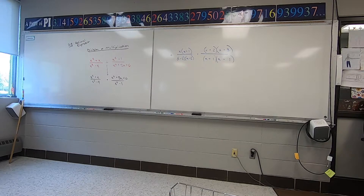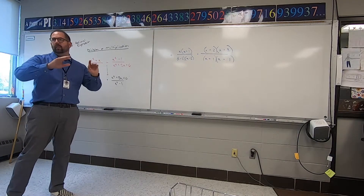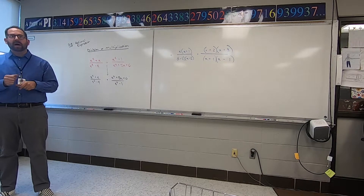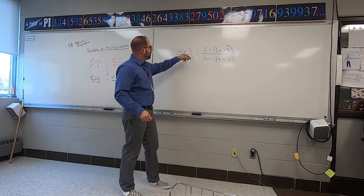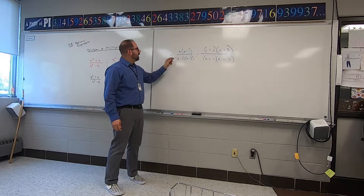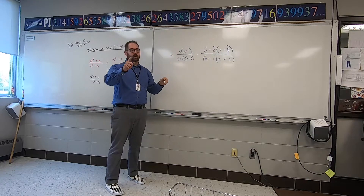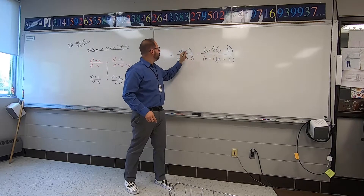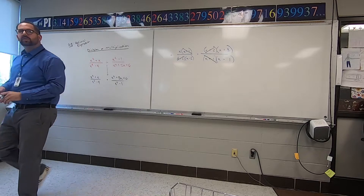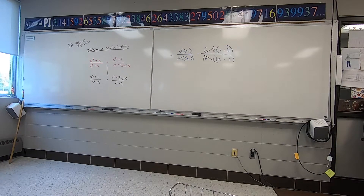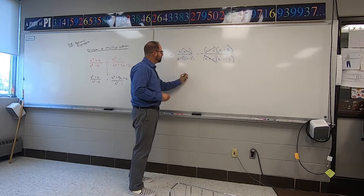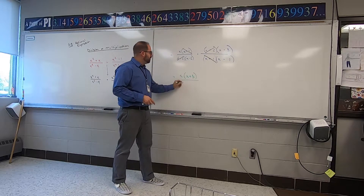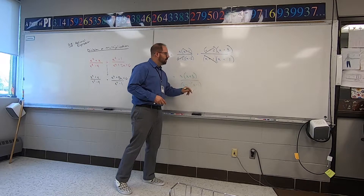Now we're to the point on multiplication — we don't need to flip anything, we've factored everything apart. Now you can start to cancel stuff out: top, bottom, right, left, however you want. Going diagonally, I can cancel X plus two and X plus one. The final answer is just multiplying everything across with what you're left with. On top I have X and X plus three; on the bottom I have X minus two and X minus one. You can leave it just like that — you don't need to foil it out.